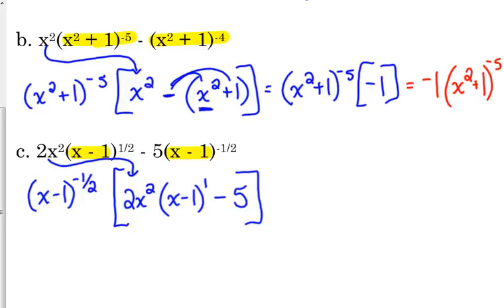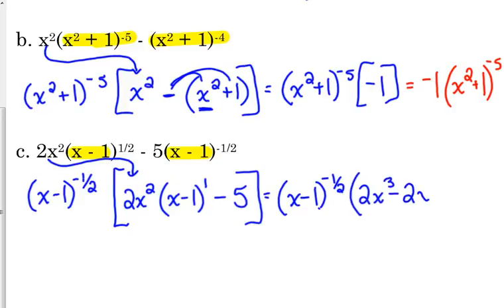It just depends on the context of the problem. We do need to simplify what's in our brackets. What is in our brackets — we get 2x cubed minus 2x squared minus 5. Sometimes what's in there simplifies more; sometimes that's all you can do with it. It just depends.